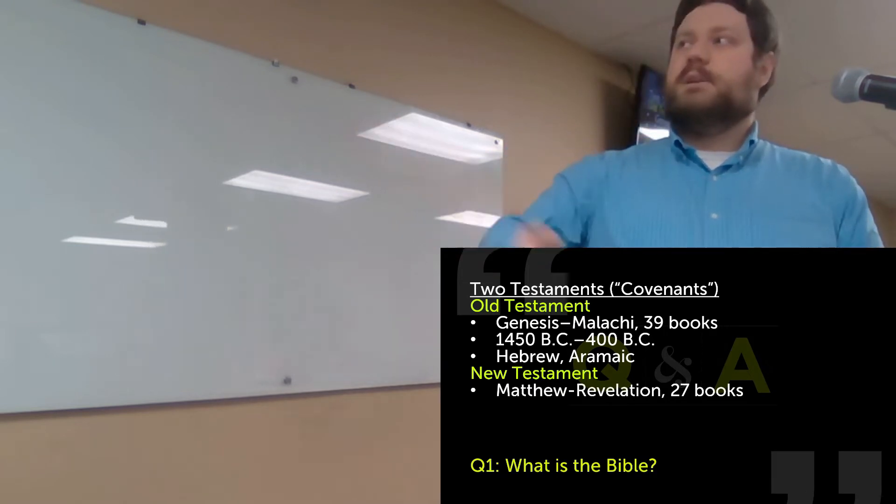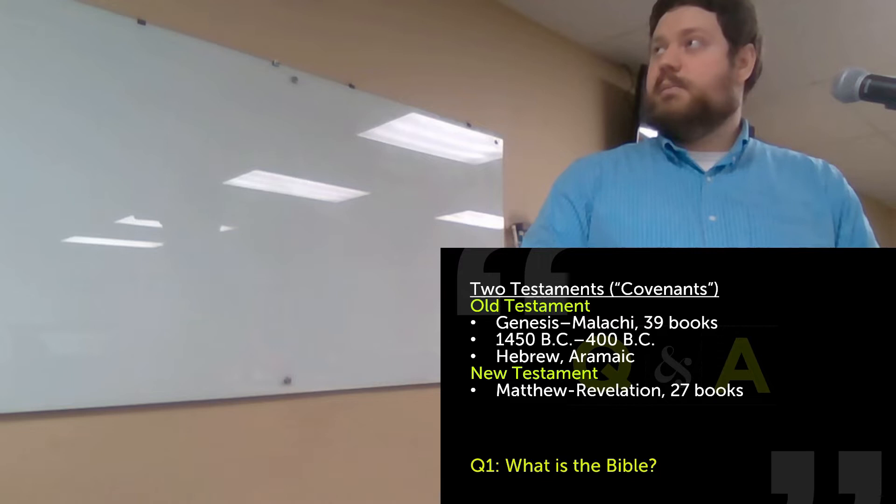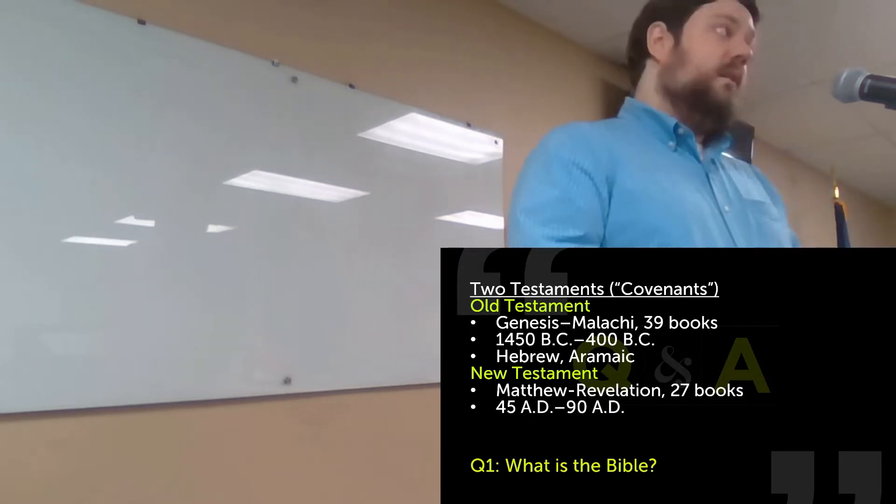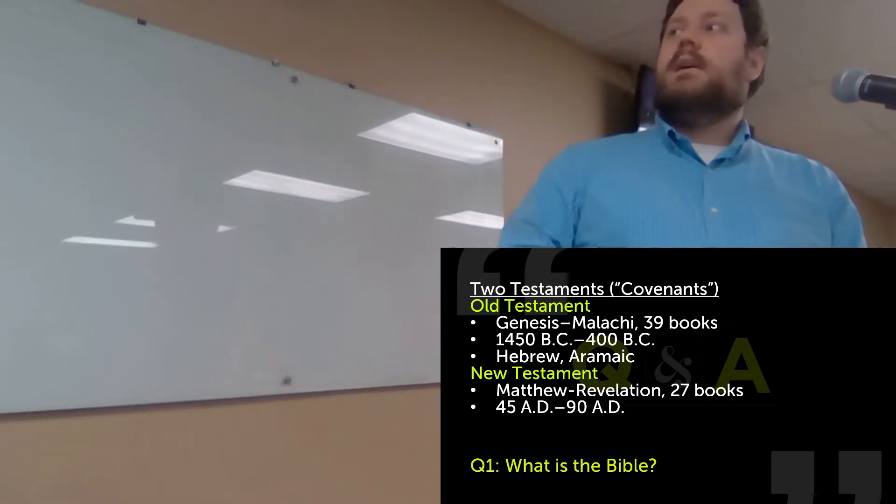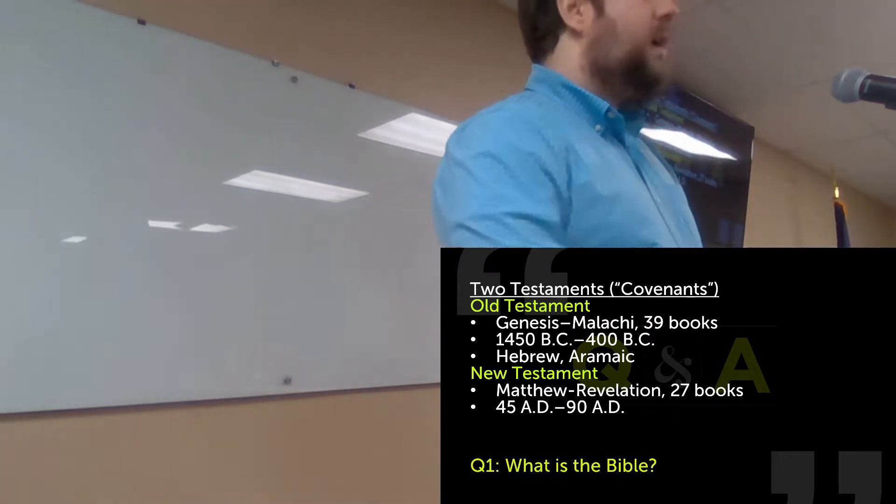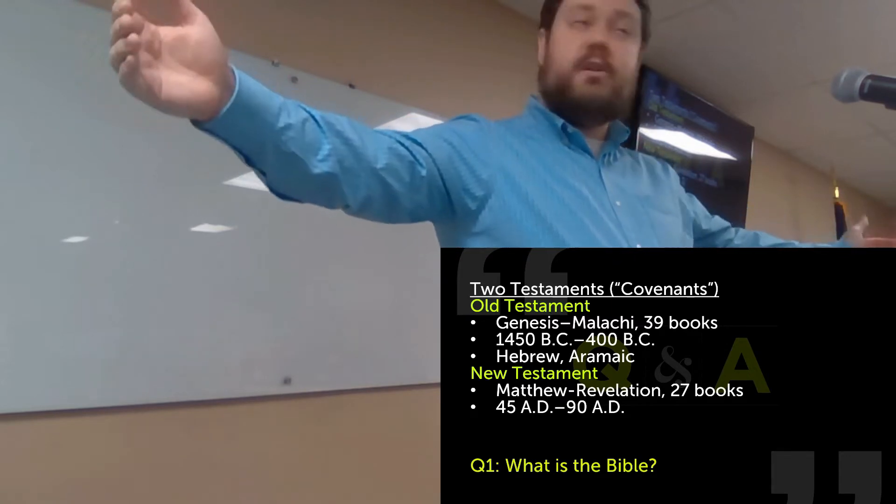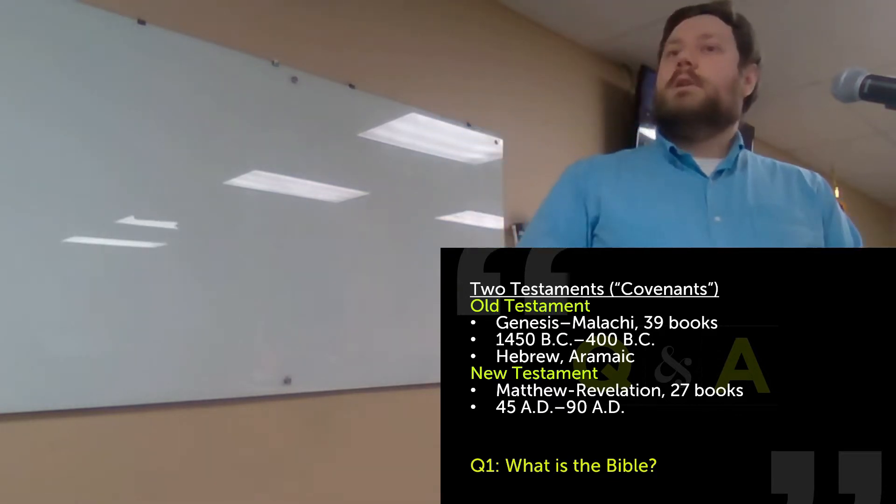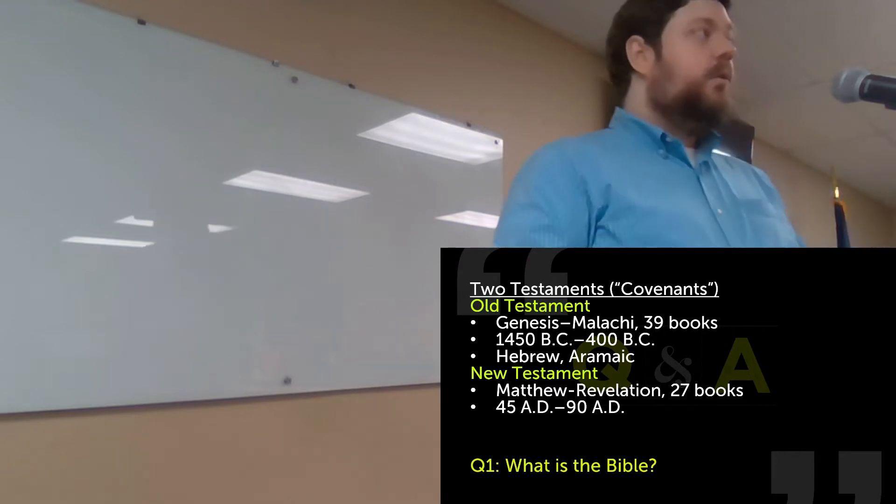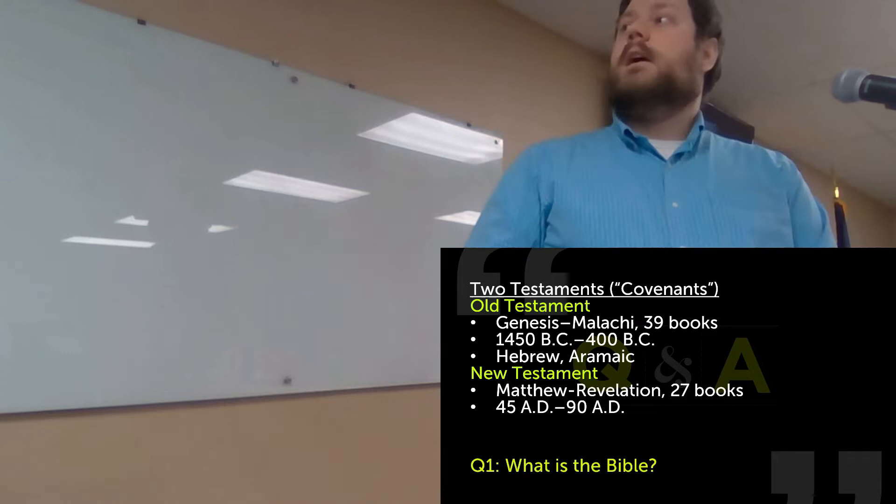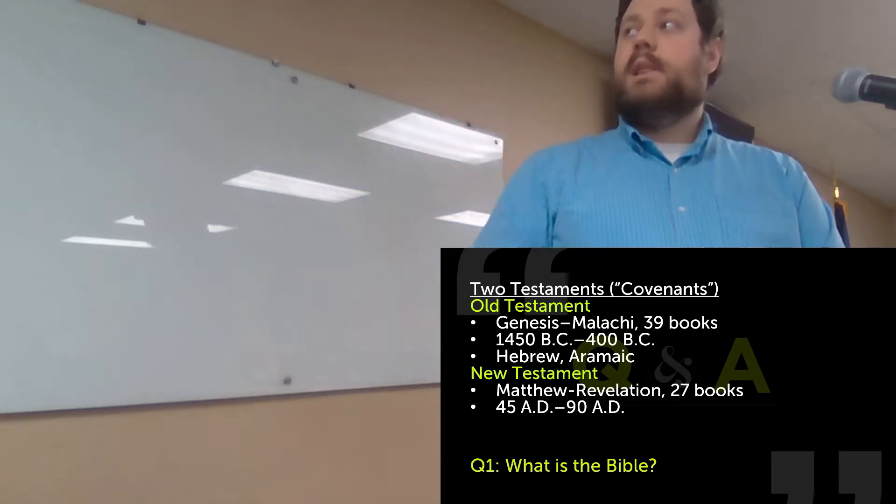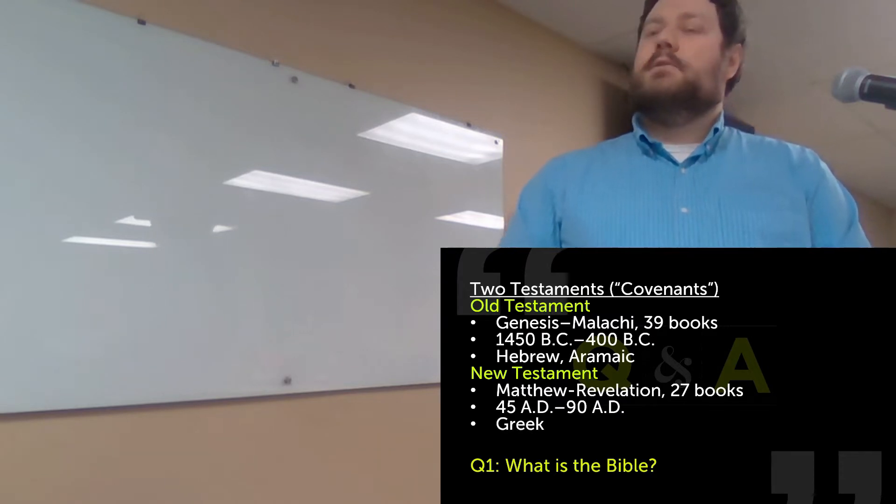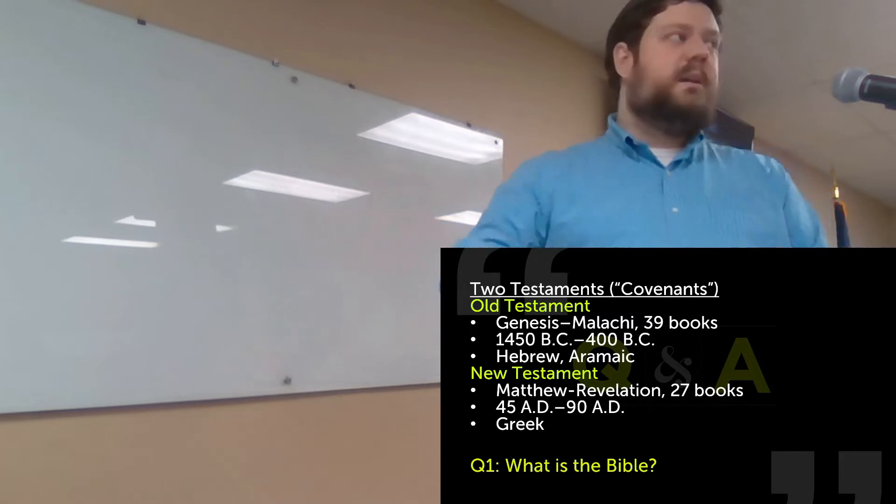And then we get to the New Testament. It's Matthew through Revelation, 27 books, for a total of 66. When was it written? Basically 45 AD to 90 AD. You'll notice one thing that's really different. We had a gap of about a thousand years for the Old Testament from the first book to the last book. In the New Testament, we've got less than 50. It all happens in short order because who wrote the New Testament? Those who had firsthand contact with Jesus or secondhand contact, as we'll see with people like Luke. The New Testament is written in Greek.